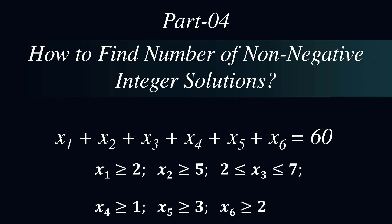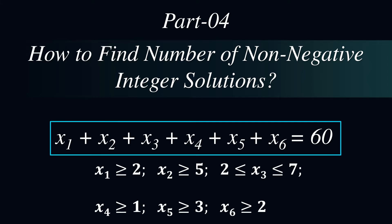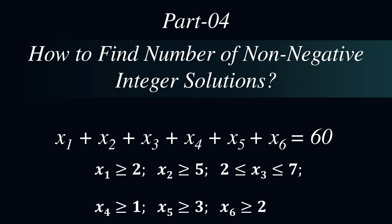Hello and welcome to part 4 of the lecture series. In this video, you will learn how to find the number of non-negative integer solutions of the equation x1 + x2 + x3 + x4 + x5 + x6 = 60,